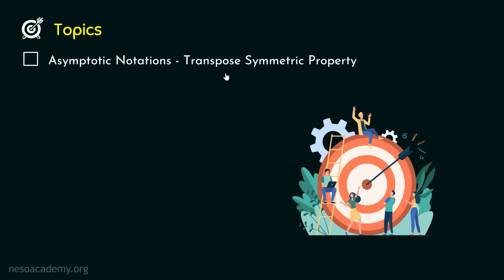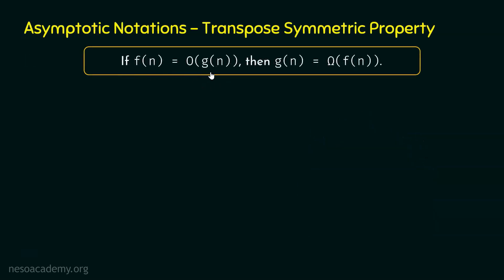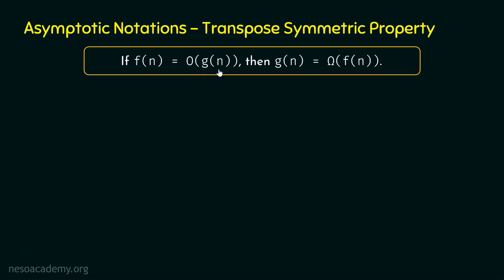Let's first see the property and understand it properly. The property states: if F(n) is O(G(n)), then G(n) is Ω(F(n)). F(n) is O(G(n)) means G(n) grows asymptotically bigger than F(n) — G(n) is the upper bound of F(n). If G(n) is the upper bound of F(n), then F(n) grows asymptotically lesser than G(n), which means G(n) is big-Omega of F(n). This is the meaning of the transpose symmetric property.